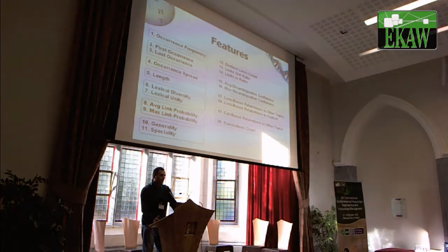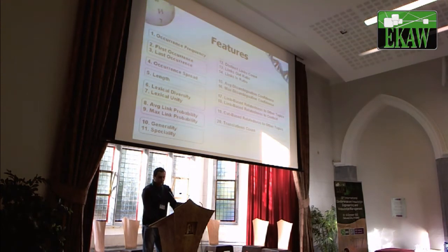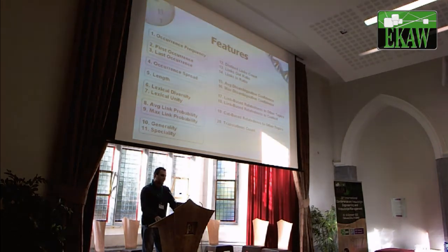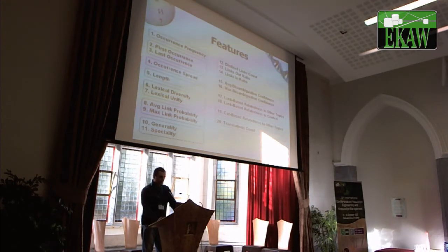Features 15 and 16 measure how confident we are about the disambiguation of that topic — for example, how sure we are that the topic refers to Java programming and not Java the island. Features 17, 18, and 19 measure how relevant that topic is to other candidates and topics inside the document.